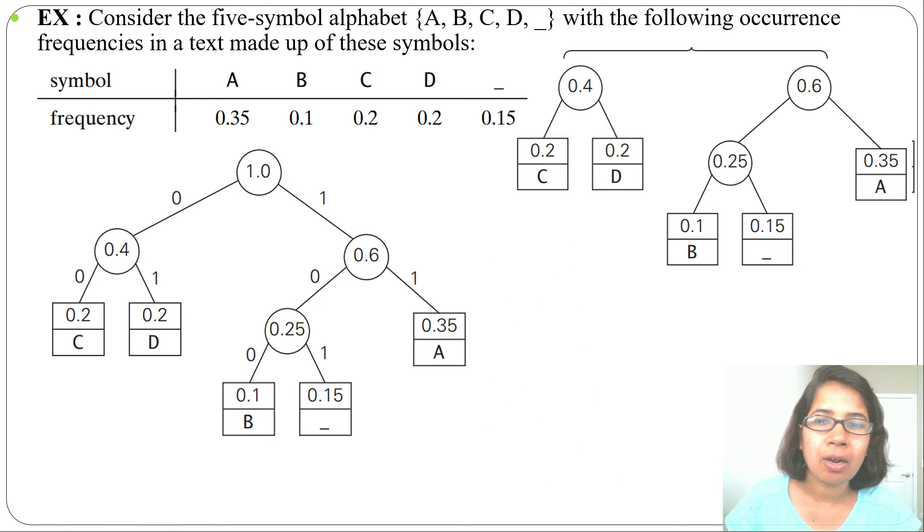So for creating the Huffman tree, first we'll write all the frequencies in a queue in ascending order. Then we'll pick the least two elements and merge them, and whatever the sum, that again will insert in the queue. Like this, this process will continue and finally we'll get the Huffman tree.